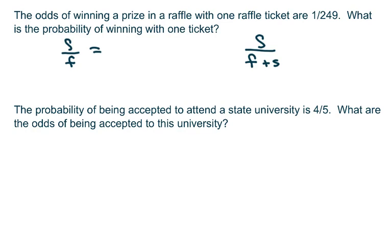So on this one, we have the odds is 1 over 249. And so the probability is going to be 1 over 1 plus 249, which equals 1 over 250. And that's your answer.